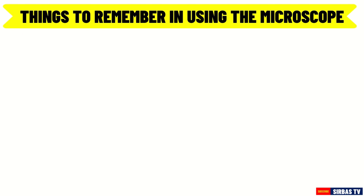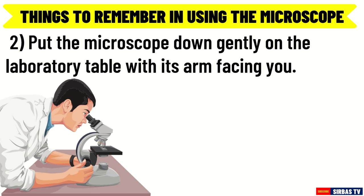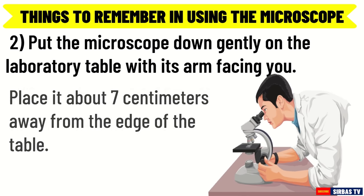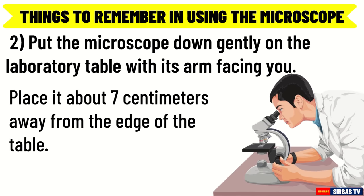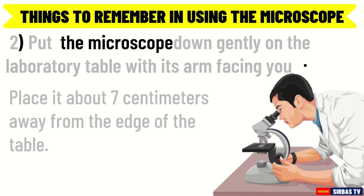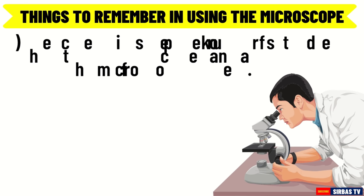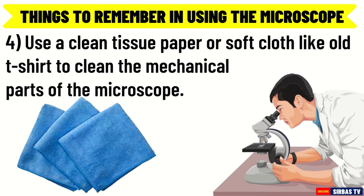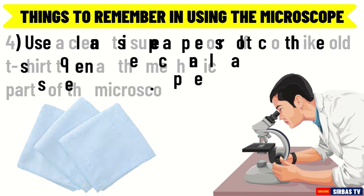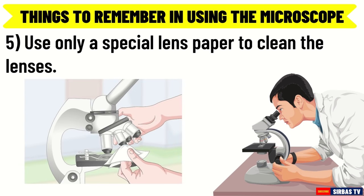Number 2: Put the microscope down gently on the laboratory table with its arm facing you. Place it about 7 cm away from the edge of the table. Number 3: Check the microscope before and after use. Report any missing or damaged part to your teacher. Number 4: Use a clean tissue paper or soft cloth — like an old t-shirt — to clean the mechanical parts of the microscope. Number 5: Use only a special lens paper to clean the lenses.